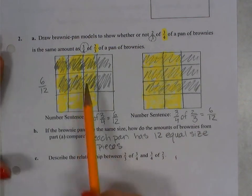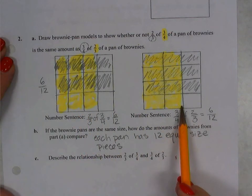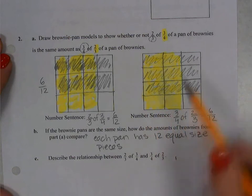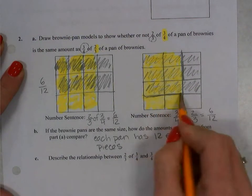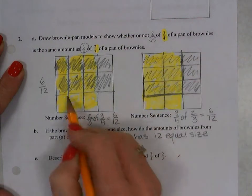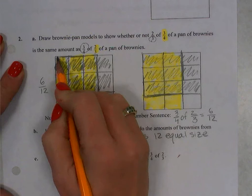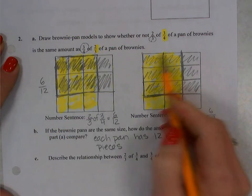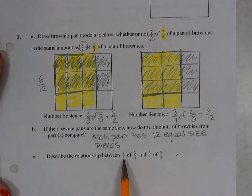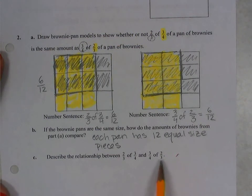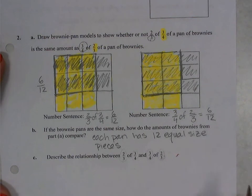So whether I purchase two-thirds of three-fourths of a pan or three-fourths of two-thirds of a pan, I'm getting the exact same amount. Here's the amount I'm purchasing here, and here's the amount that I'm purchasing here. It is the same amount. So what is the relationship between two-thirds of three-fourths and three-fourths of two-thirds? You'll notice you see those fractions repeat. They're just in a different order.